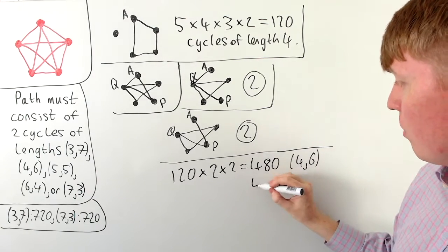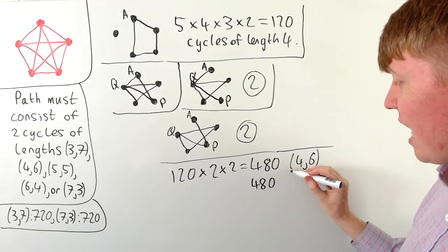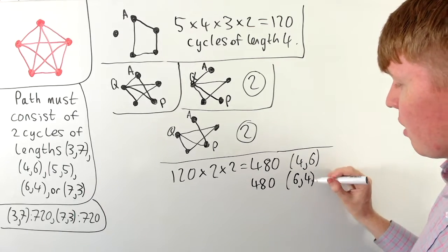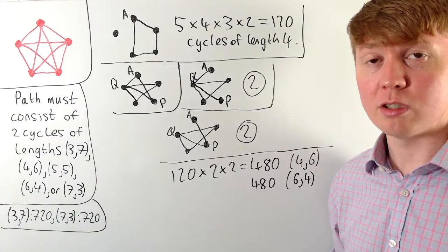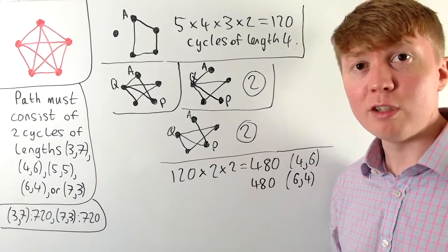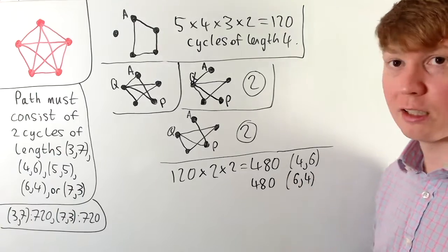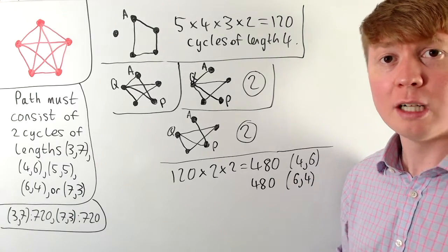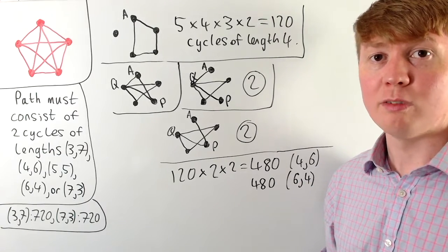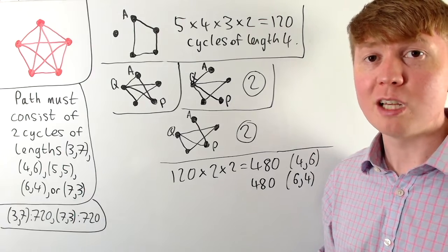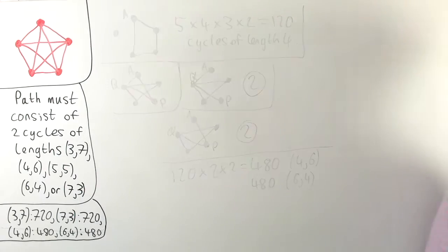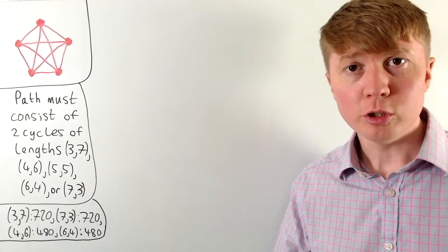Just as before, there are also 480 ways of doing this with a cycle of length six followed by a cycle of length four, because you can swap the two cycles. For every cycle of length six followed by a cycle of length four there's a corresponding Euler cycle made up of a cycle of length four followed by a cycle of length six.